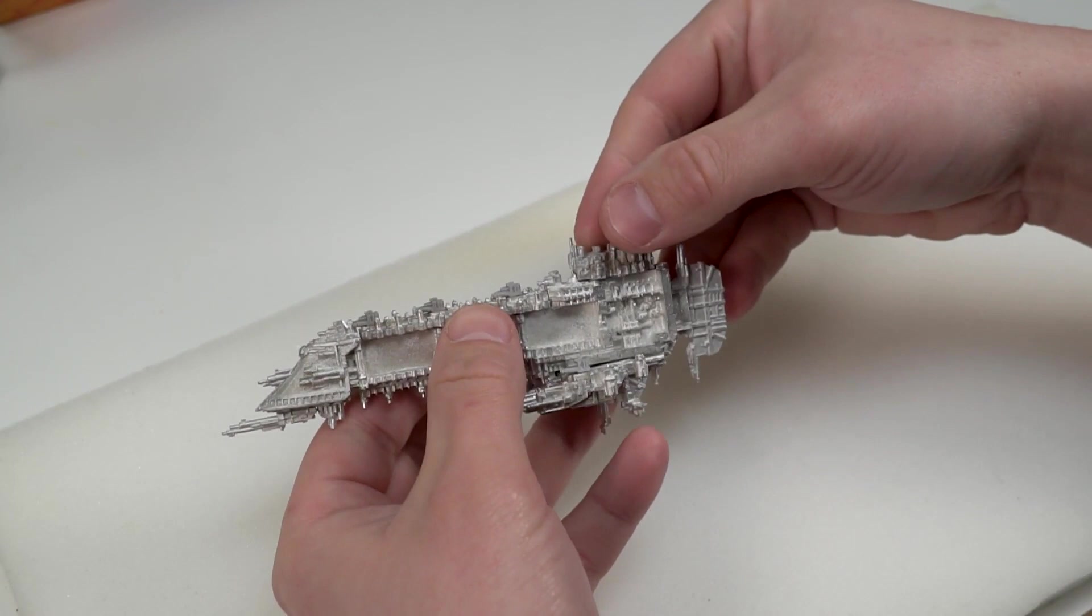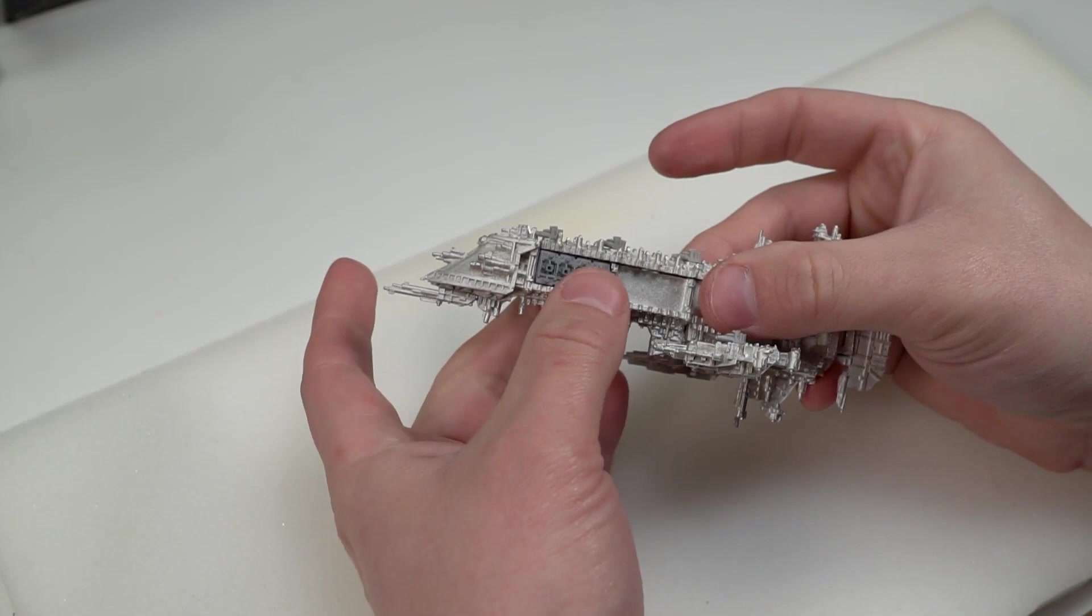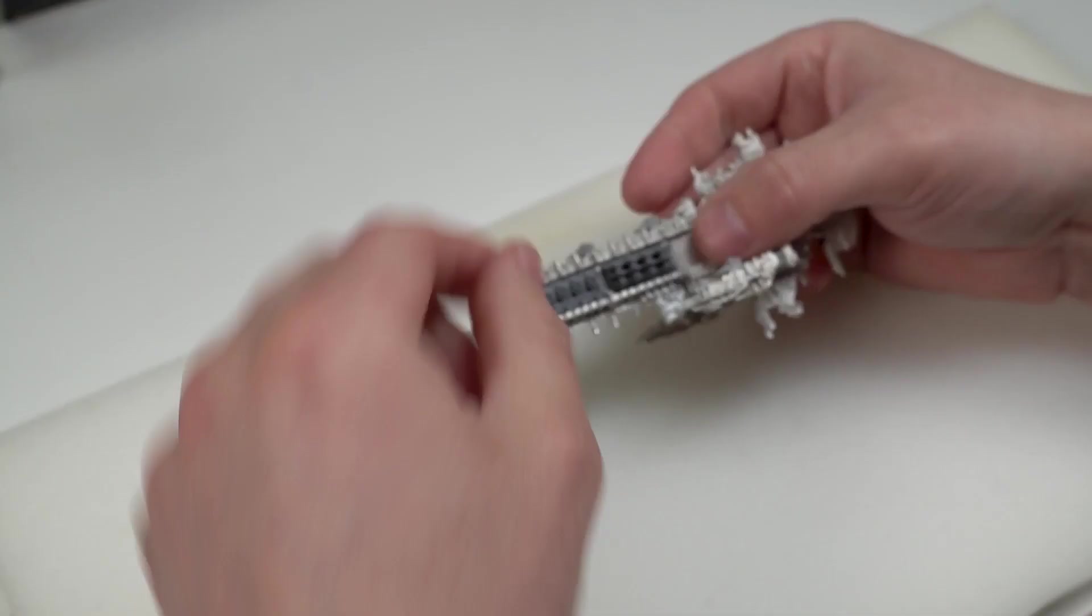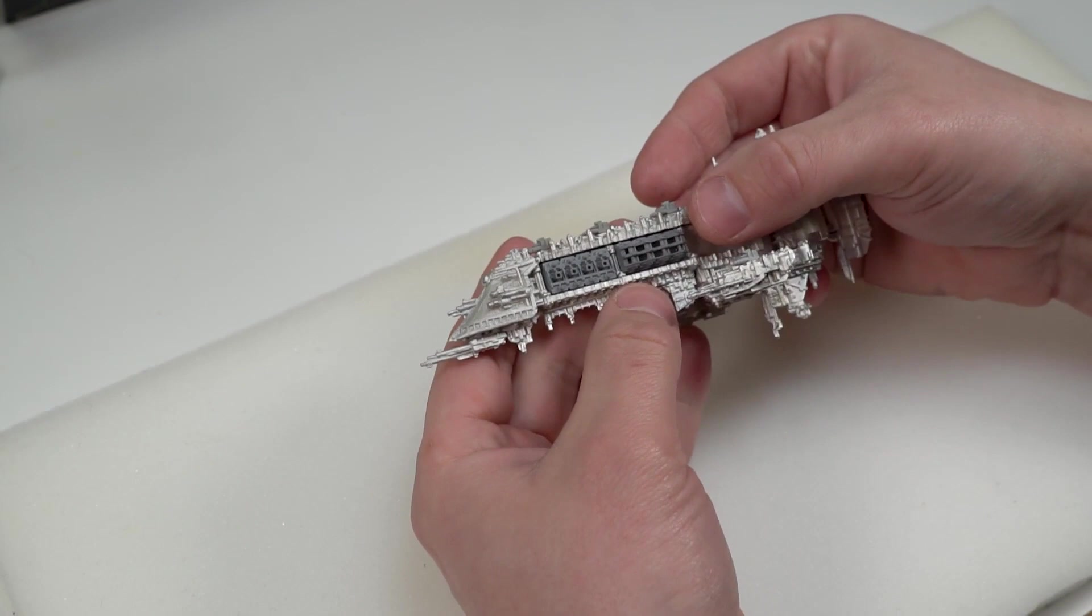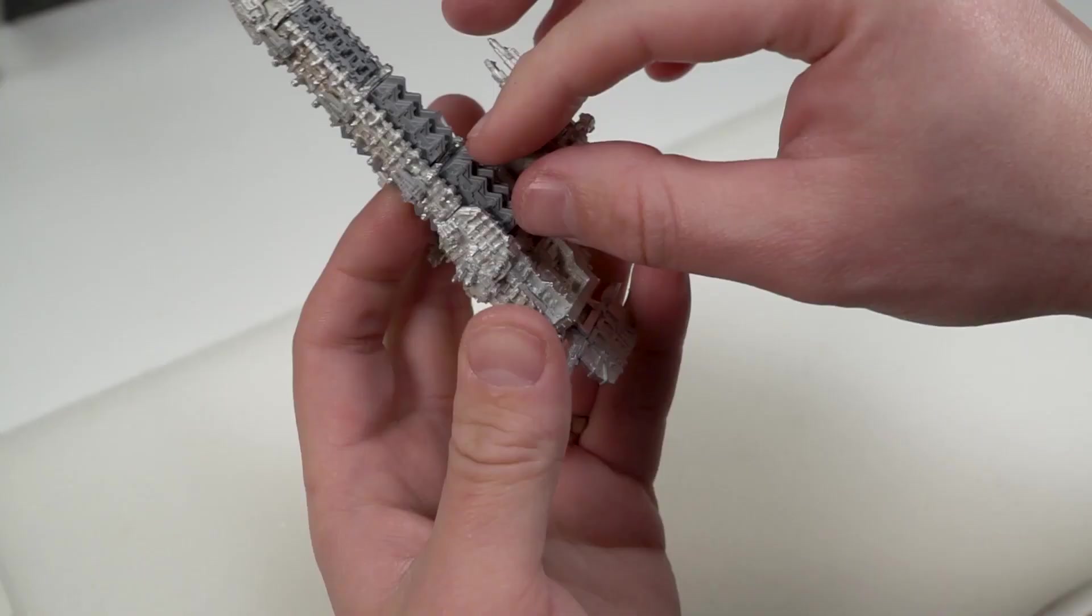Now I do recommend scoring the surfaces of both parts of metal that you're trying to bond together just to create an additional piece of surface area for the glue to sink into and bite onto. You won't need to do that for these plastic sections. They glue on basically immediately to the metal surface, which is very nice considering the rest of this model can be very tricky.